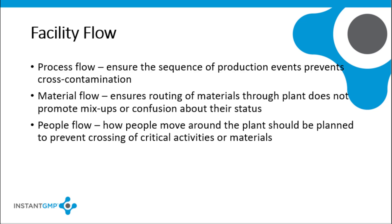Material flow is shown on the plan of the factory as the routing of materials throughout the facility. It is important to show the status of the materials as well. This means indicating whether they are quarantined, approved, or rejected, and also the volume, weight, or frequency of movement, and the way in which the material is to be moved. There should be no cross-flow of materials.